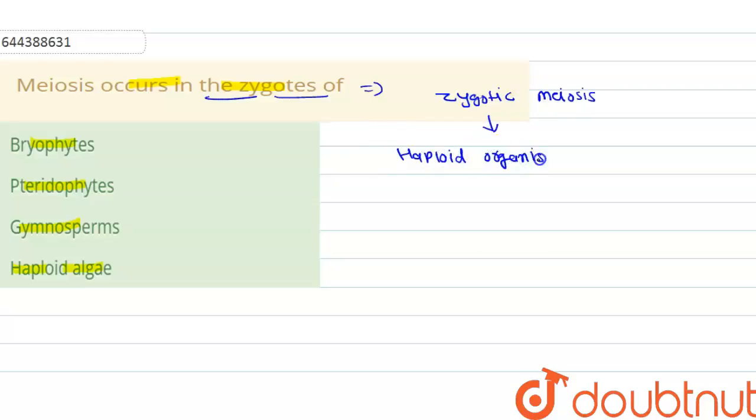Or we can say haploid life cycle, or haplonic life cycle. So organisms which are showing the haplonic life cycle can undergo zygotic meiosis.